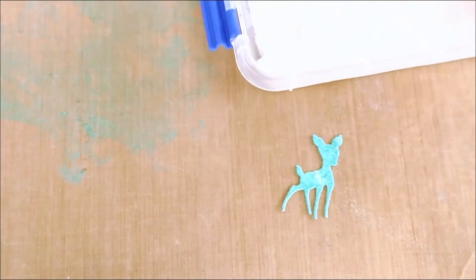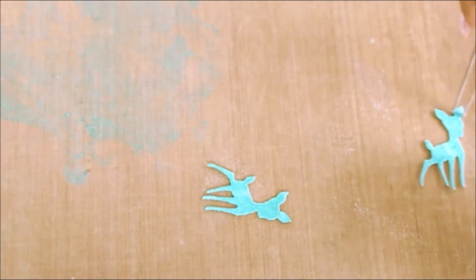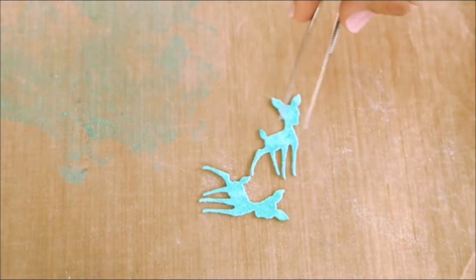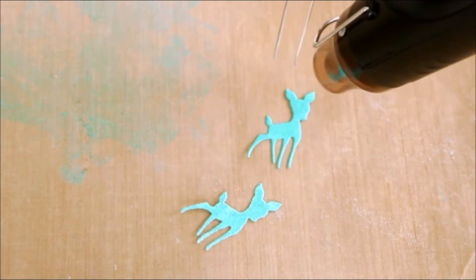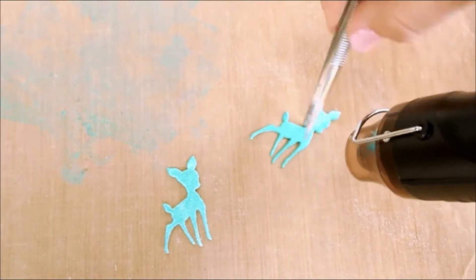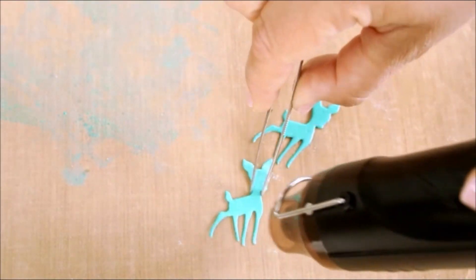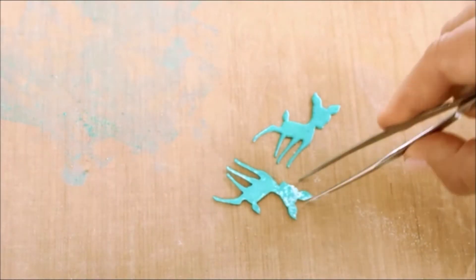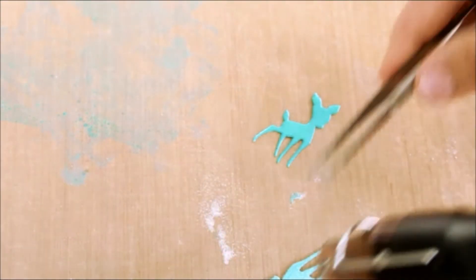Now this ink is sticky enough to allow my embossing powder to stick to it. So here I am dipping each fawn into clear embossing powder. Then holding them gently around the neck with some tweezers while I melt the embossing powder with a heat gun. I'm thickening the gloss look by dipping each fawn back into the embossing powder while it's hot and re-melting it.